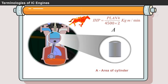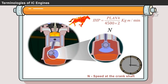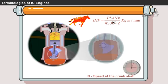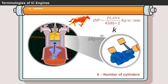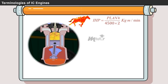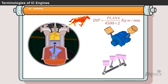L is the stroke length. A is the area of cylinder. N is the speed at crankshaft. And K is the number of cylinders in the engine. Most tractor engines are designed with 2 to 4 cylinders.